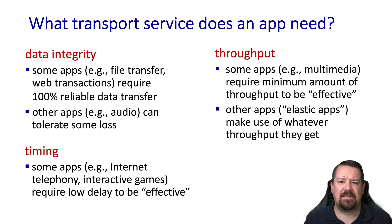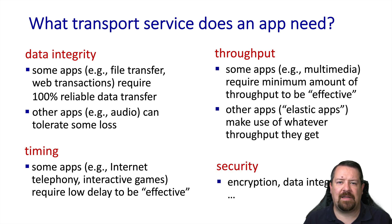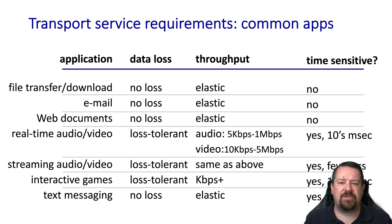Other applications are less concerned with latency and more concerned with throughput. For example, a streaming video without sufficient throughput will continuously stop and rebuffer and may be unusable for the viewer. Other applications are elastic — such as a file download, which may take longer with low throughput but can still complete correctly. Last but not least is security: some applications may expect either a data integrity or confidentiality service from the layer below.